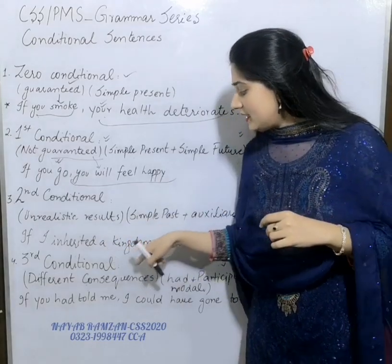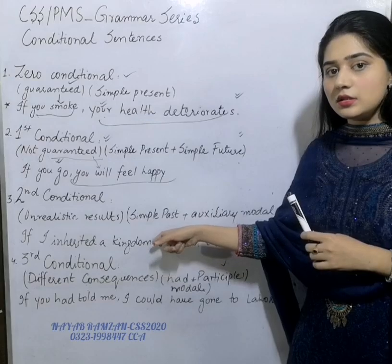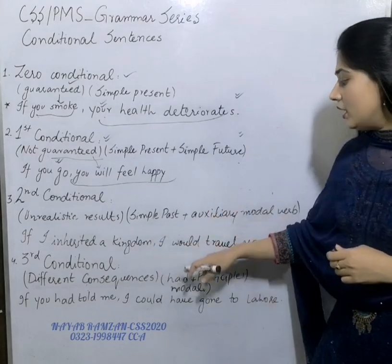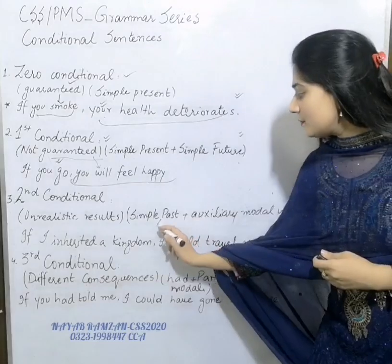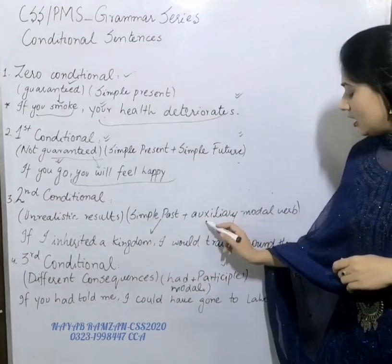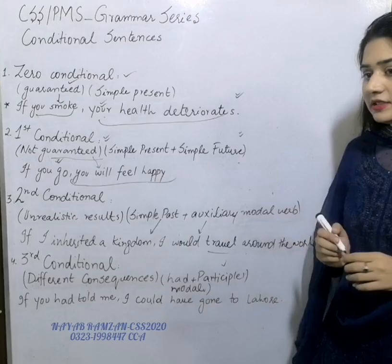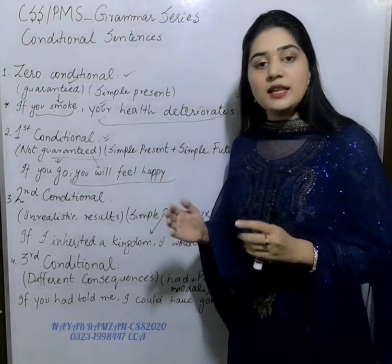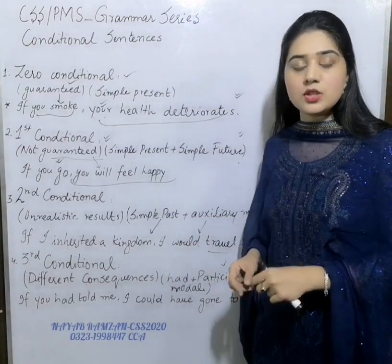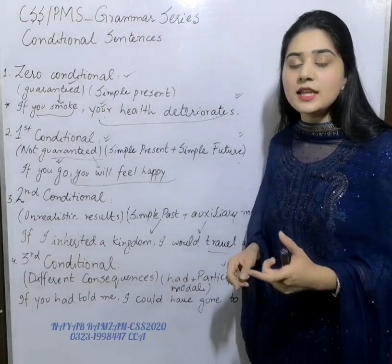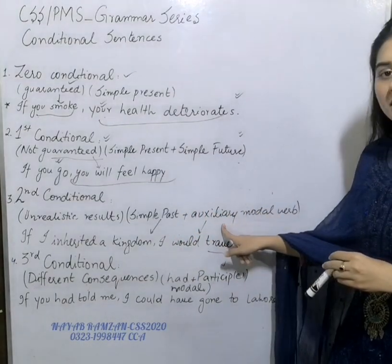In second conditional, we use simple past tense in the if-clause. For example: 'If I inherited a kingdom, I would travel around the world.' Here the if-clause is in simple past and the result clause uses an auxiliary modal verb — would, could, or might — followed by the first form of the verb. These modal verbs will be discussed in detail in the next video lecture, but this is the grammar rule for second conditional.